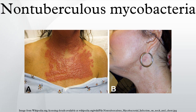Disseminated mycobacterial disease was common in U.S. and European AIDS patients in the 1980s and early 1990s, though the incidence has declined in developed nations since the introduction of highly active antiretroviral therapy. It can also occur in individuals after renal transplantation.